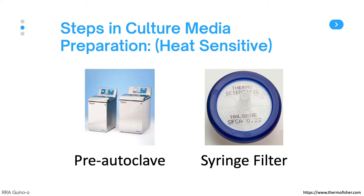When you need to prepare culture media that are heat sensitive, you can proceed in two ways. First, you can pre-autoclave all the materials needed for culture media preparation, except the heat-sensitive culture media. Once the other materials have autoclaved and cooled down, add your heat-sensitive media and mix, making sure to use aseptic technique. The second method is using a syringe filter. Simply mix distilled water and your heat-sensitive media using aseptic technique, then pass it through the syringe filter. The filter should filter out any bacteria present, making the media sterile. Note that the filter size you need is 0.22 micrometers.